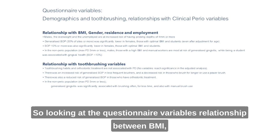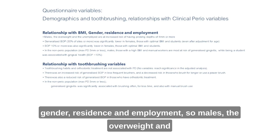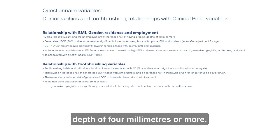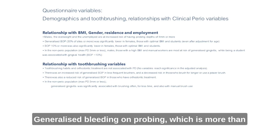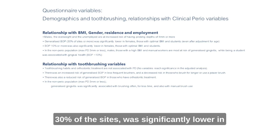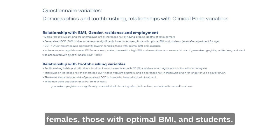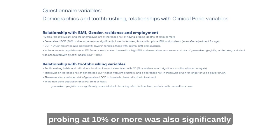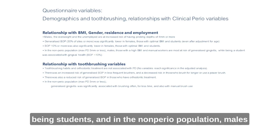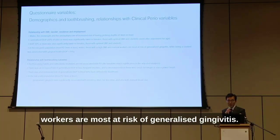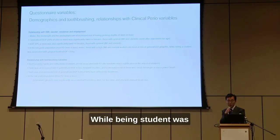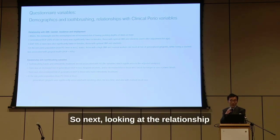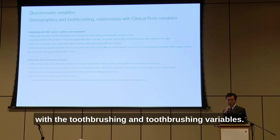Looking at questionnaire variables — the relationship between BMI, gender, residence, and employment — males, the overweight, and the unemployed are at increased risk of having probing depth of four millimeters or more. Generalized bleeding on probing, defined as more than 30% of sites, was significantly lower in females, those with optimal BMI, and students, even after adjustment for age. Bleeding on probing at 10% or more was also significantly lower in females, those with optimal BMI, and students. In the non-perio population, males, those with high BMI, and manual workers are most at risk of generalized gingivitis, while being a student was associated with gingival health.